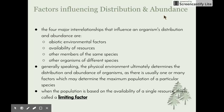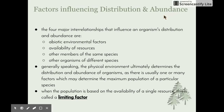Other members of the same species — organisms need to be able to reproduce in order to maintain populations. And organisms of different species, such as those the animal feeds on, help keep the ecosystem working properly. Generally speaking, the physical environment ultimately determines the distribution and abundance of organisms, as there is usually one or many factors which determine the maximum population of a species. When the population is based on the availability of a single resource, this is called a limiting factor.